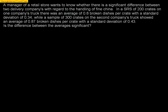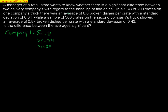To run the hypothesis test, the first thing we want to do is get things in order and understand exactly the information we have. Company one had a sample average of 0.8 broken dishes, a standard deviation of 0.34, and a sample size of 200. Company two had an average number of broken dishes of 0.87, a standard deviation of 0.43, and a sample size of 300.